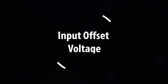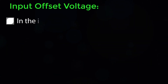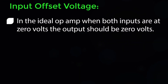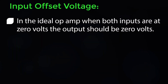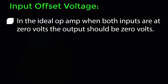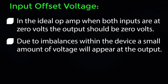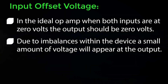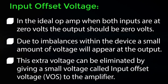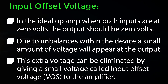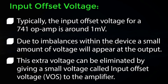Input Offset Voltage: In the ideal OPAMP, when both inputs are at 0 V, the output should be 0 V. Due to imbalances within the device, a small amount of voltage will appear at the output. This extra voltage can be eliminated by giving a small voltage called Input Offset Voltage VOS to the amplifier. Typically, the input offset voltage for a 741 OPAMP is around 1 mV.